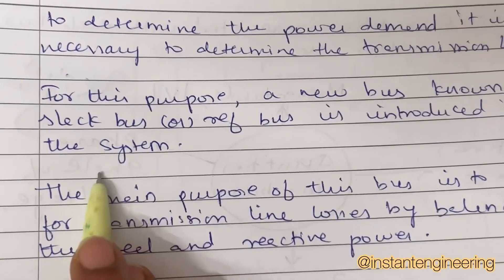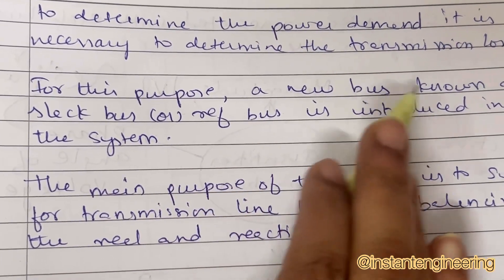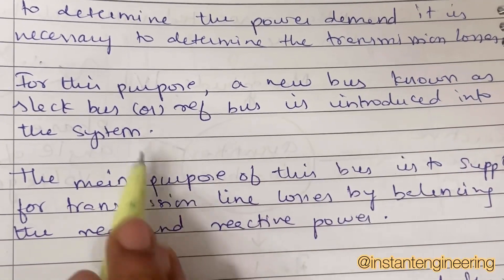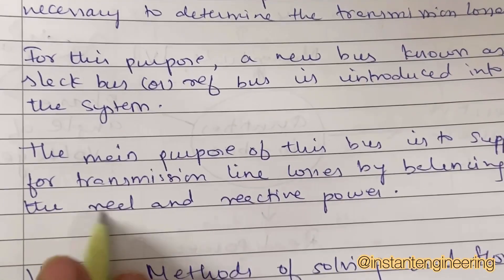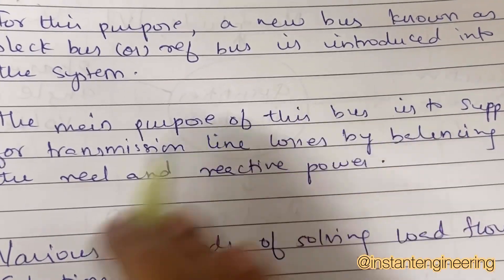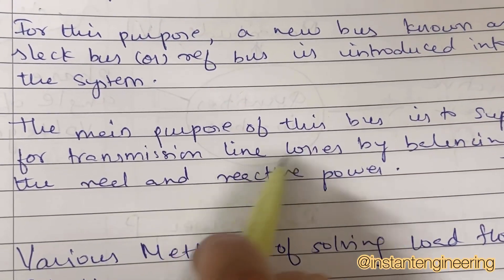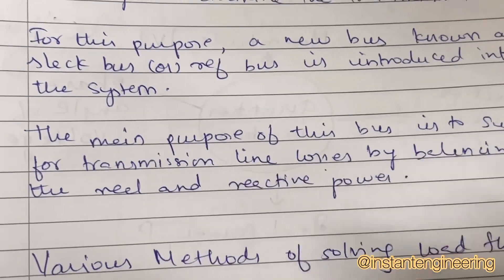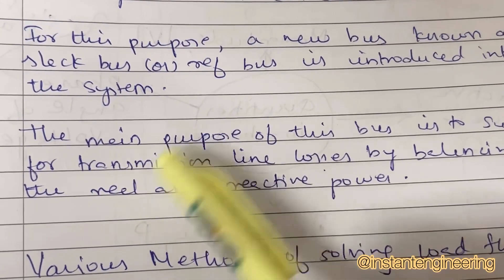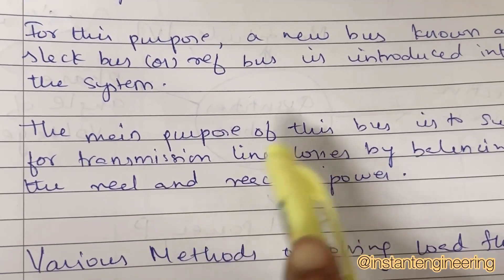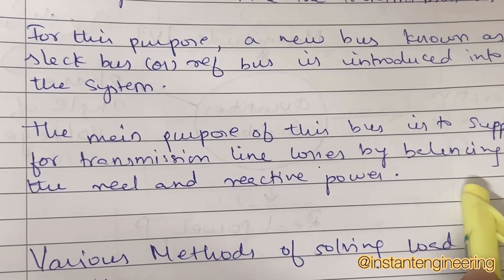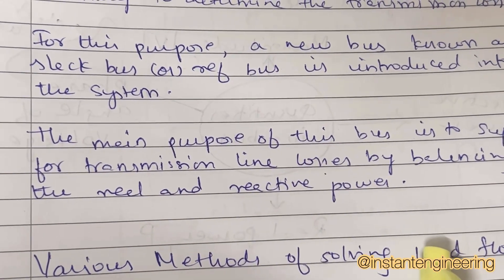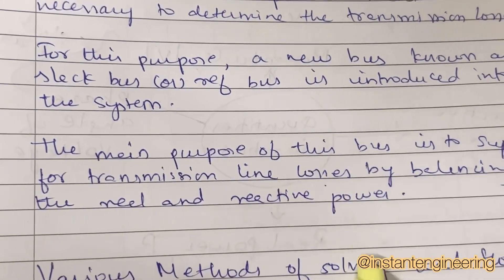For this purpose, a new bus known as slack bus or reference bus is introduced into the system. The main purpose of this bus is to supply for transmission line losses by balancing the real and reactive powers — P and Q. This is what the slack bus is all about.